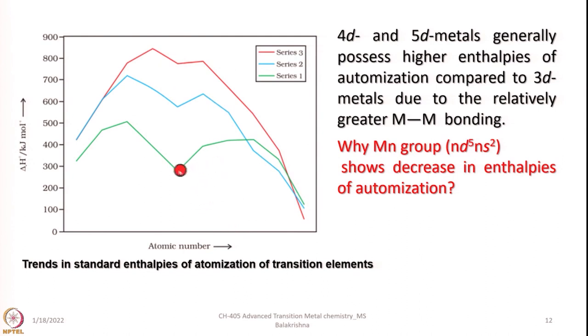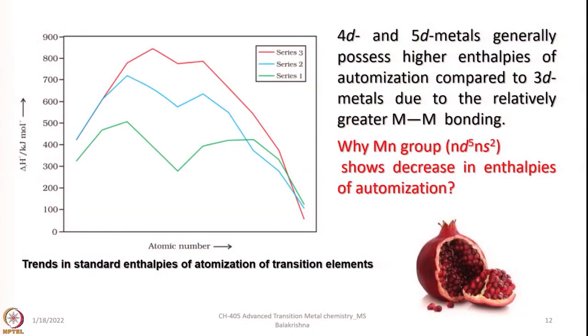Trends in standard enthalpies of atomization of transition elements show that as more and more electrons are added to the D orbital, enthalpy increases steadily, but once the configuration reaches half-filled it dips, then rises again and falls. The enthalpy of atomization decreases for the manganese group having the Nd5s2 electronic configuration. The reason is that because the D5s2 configuration is half-filled, these electrons are more stable, pulled more readily toward the nucleus, and have very minimum interelectronic repulsion, making it difficult for electrons to dislodge from their position. As a result, metallic bonding is a little weaker and hence the enthalpy of atomization decreases.